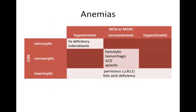Now for the anemias. We have three possible size ranges and three possible ranges of hemoglobin content, giving nine theoretical possibilities, but we can simplify matters for this course. We can really ignore the MCH or MCHC and focus on cell size: microcytic, normocytic, or macrocytic. Microcytic anemias occur because of a lack of iron to make heme, which makes the cells hypochromic as well, or because a drug or toxin such as lead interferes with iron incorporation into hemoglobin, also resulting in hypochromaticity. Either way, microcytic hypochromic anemia results from interference with normal hemoglobin synthesis.